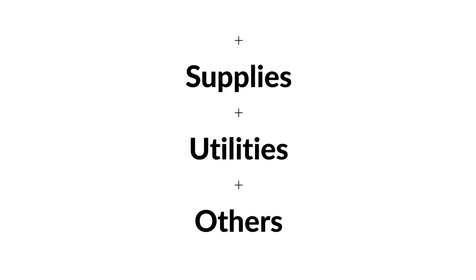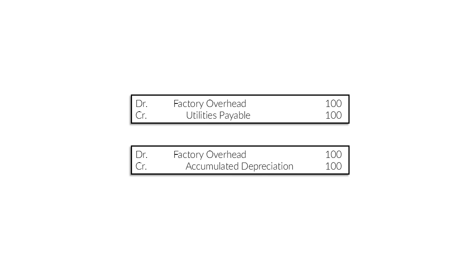For supplies, utilities, and others, what happens is that we credit utilities payable and we debit factory overhead. And for other types of expenses like accumulated depreciation, we credit accumulated depreciation and we debit factory overhead. So it's the same idea — we transfer the cost to the factory overhead account. Anything considered factory overhead, we transfer it to that account by debiting it and crediting whatever it was.